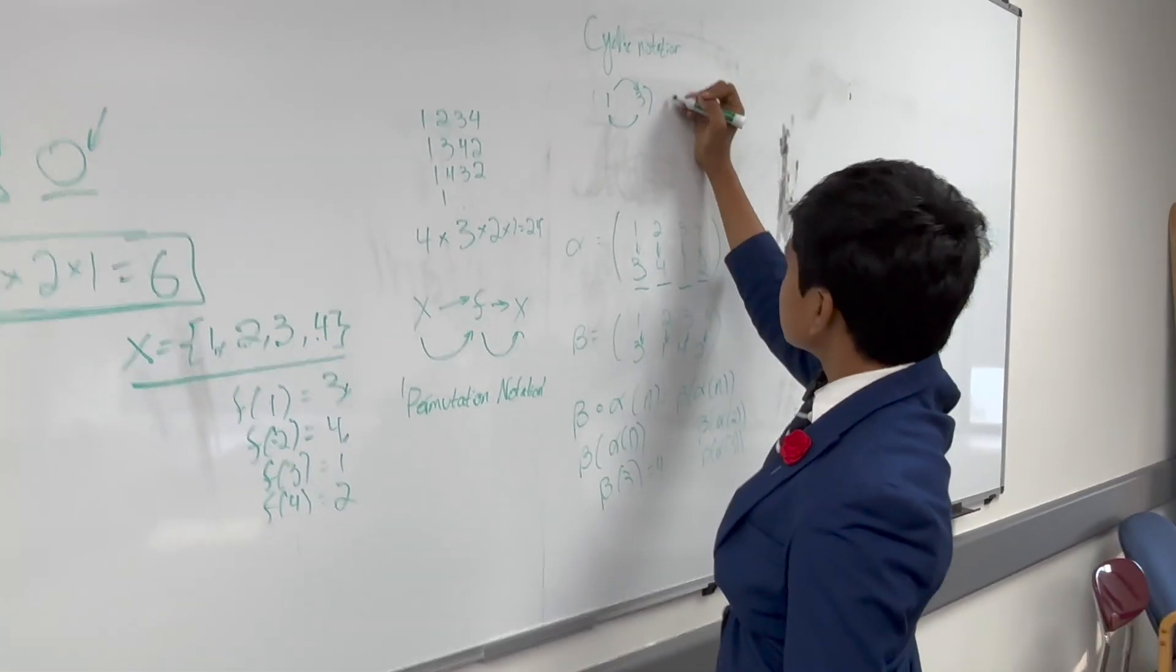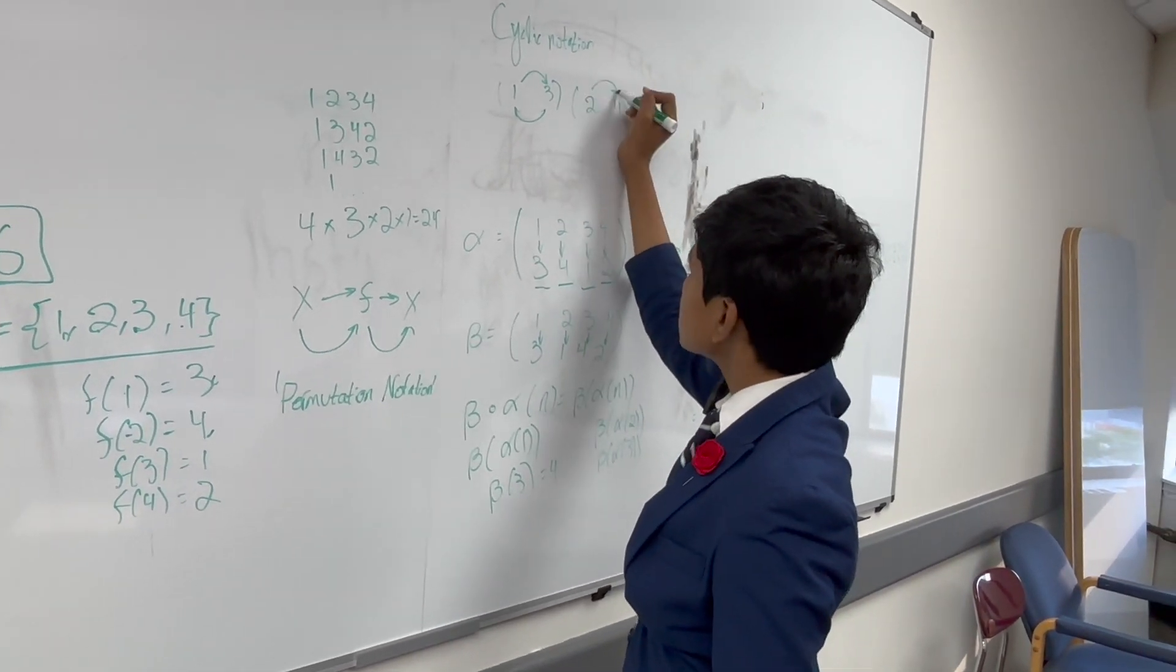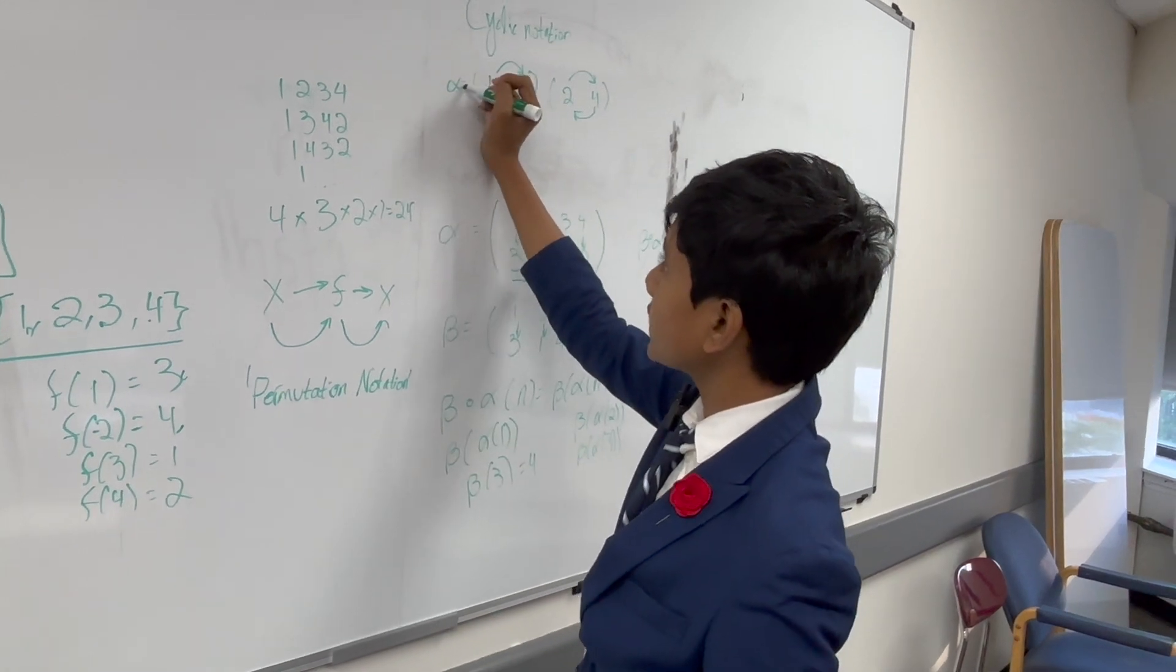And then, it should be pretty apparent, 2 goes to 4. And, 4 goes back to 2. So, we have another cycle. And, that's how we write alpha.